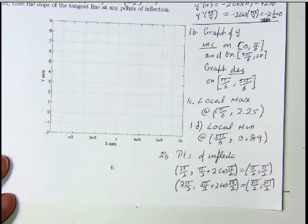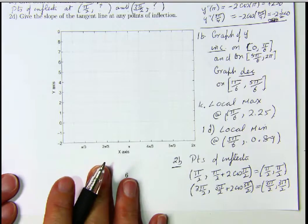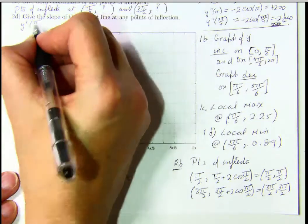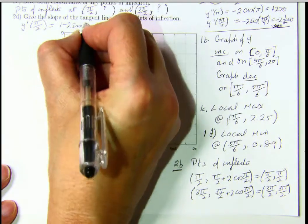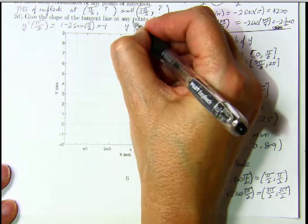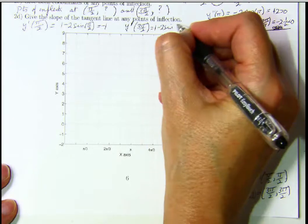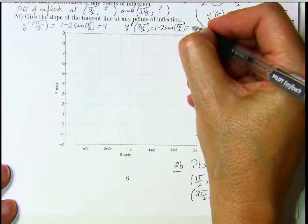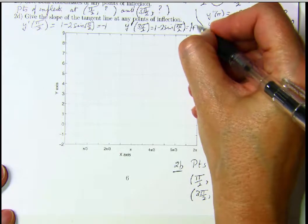There's one more part to the problem: give the slope of the tangent line at the points of inflection. The slope of the tangent line is the value of y prime. At π/2, that's 1 minus 2 times sine(π/2), which is minus 1. And at 3π/2, it's 1 minus 2 times sine(3π/2), which is 1 minus 2 times minus 1, so that's 1 plus 2, which is 3.